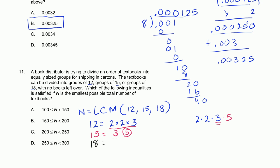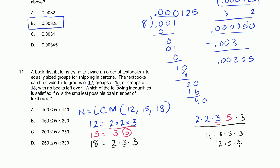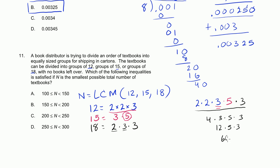Now we have 2 times 2 times 3 times 5 times 3, which is the least common multiple of 12, 15, and 18, because it contains all the prime factors of each. Multiplying: 2 times 2 is 4, times 3 is 12, times 5 is 60, times 3 equals 180. So the smallest total number of books is 180, and 180 is between 150 and 200. That means the answer is choice B.